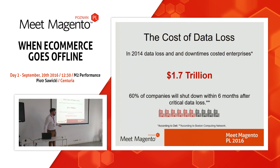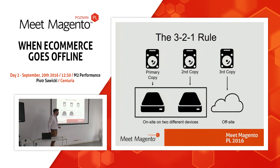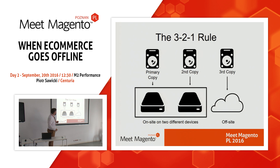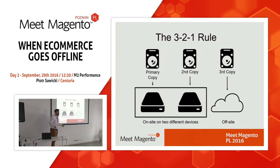So I think we now all agree that we should back up. How do we do it? There is a so-called 3-2-1 rule of backing up. It says you should have at all times at least 3 copies of your data. Two of them should be stored on-site on two different devices, and one should be stored somewhere else — in a remote, off-site location. This helps in two ways: if you lose one copy, you still have two more to recover from, and if you lose one location, you still have another one to recover from.